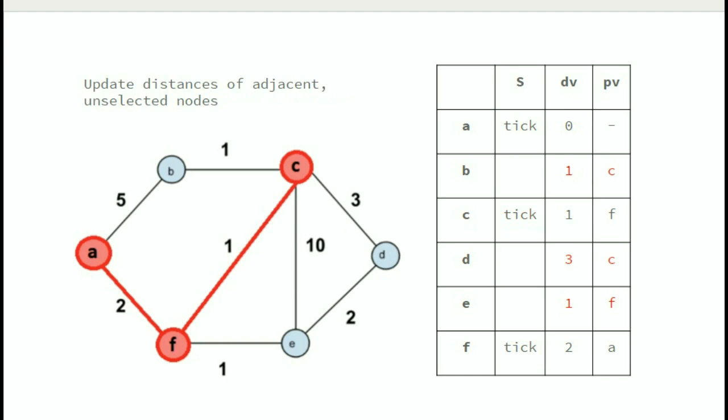Again we update distances of adjacent nodes from C. Here we see that the distance of B was 5 from A, but now after discovering C, since 1 is less than 5, we update B's distance to 1 and its parent to C. Also after discovering the edge between C and E, we find that the distance of E should remain 1 only since 1 is less than 10, so we don't update its distance and parent. Next we update the distance of vertex D from C having weight 3 and mark it as visited.